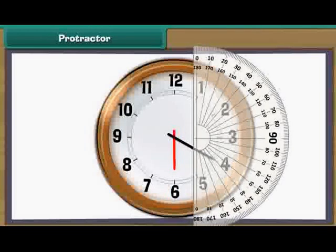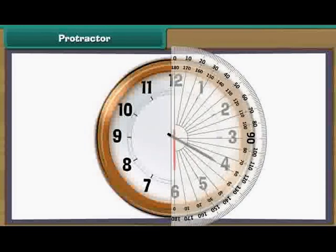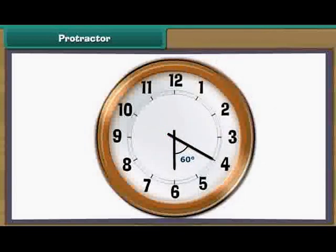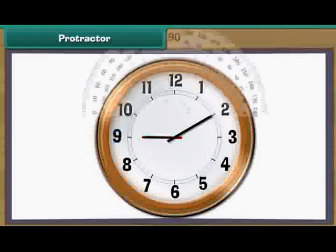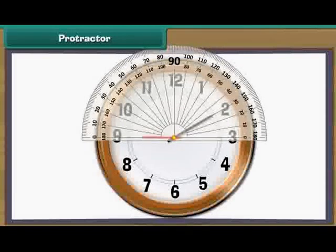The time is 10 past 9 by this clock. The long hand of the clock is on 2 and the short hand is on 9. Place the protractor on the short hand of the clock. Read the outer marking of the protractor on which the long hand rests. It is 150 degrees. Therefore, the time 10 past 9 makes an obtuse angle.